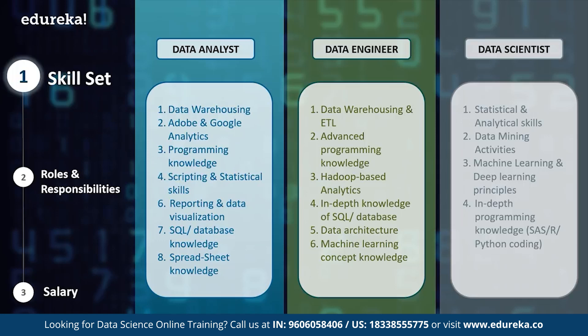A data scientist needs to be a master of both worlds — data, stats, and math — along with in-depth programming knowledge of machine learning and deep learning. The ideal job description for a data scientist includes statistical and analytical skills, various data mining activities, machine learning and deep learning principles and algorithms, and in-depth programming knowledge in languages such as SAS, R, or Python.